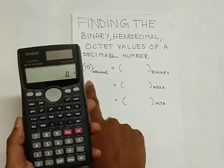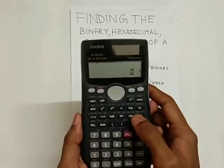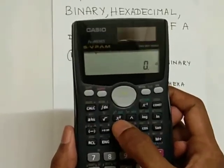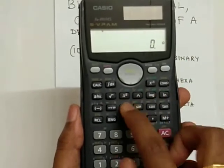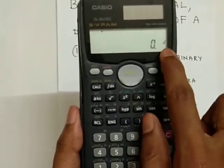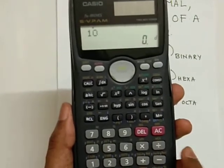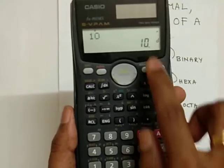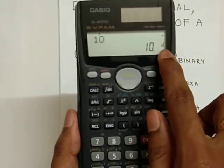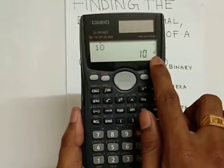Since 10 is in decimal, press DEC which is above x square. Then you can see D here. Press the value 10, press equal to. This takes 10 in decimal format as input.